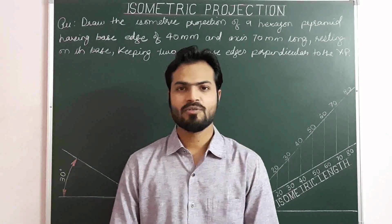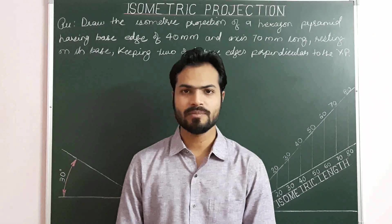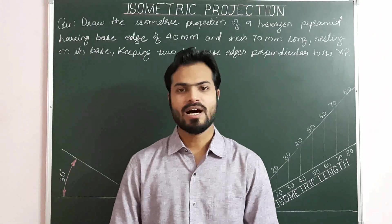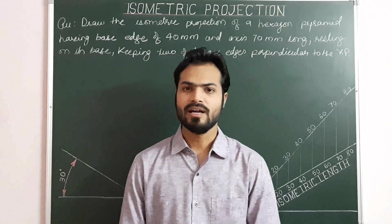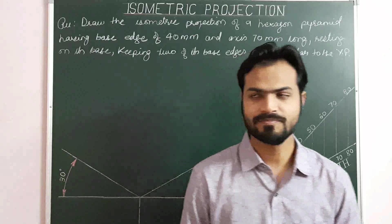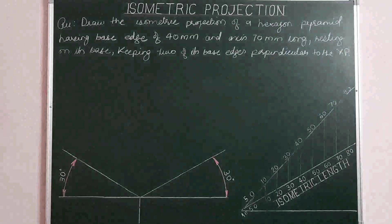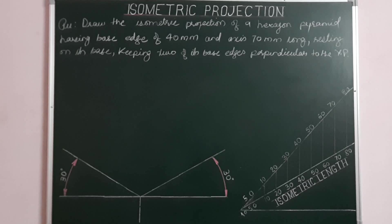Hello everyone. Today we are going to explore one more category of solids — that is pyramids — and we will see how isometric projection of pyramids and prisms are different from each other. So let's begin with the problem: Draw the isometric projection of a hexagonal pyramid having a base edge of 40 mm and axis 70 mm long, resting on its base keeping two of its base edges perpendicular to the VP.